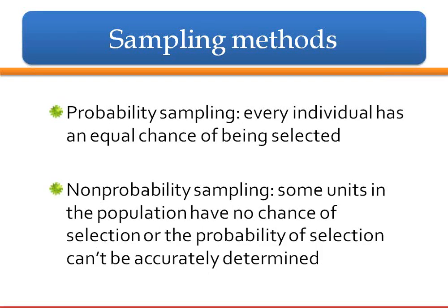Sampling methods: there are two kinds — probability sampling and non-probability sampling. When you really get into survey research to get the best results, you go with probability sampling, where every individual has an equal chance of being selected. However, it doesn't always work that way at the level that we're conducting surveys. So we might go with non-probability sampling, where some units in the population don't have any chance of being selected, or you can't accurately determine what the probability of them being selected is.